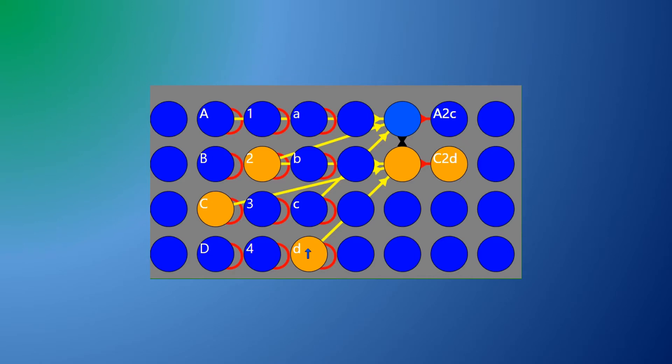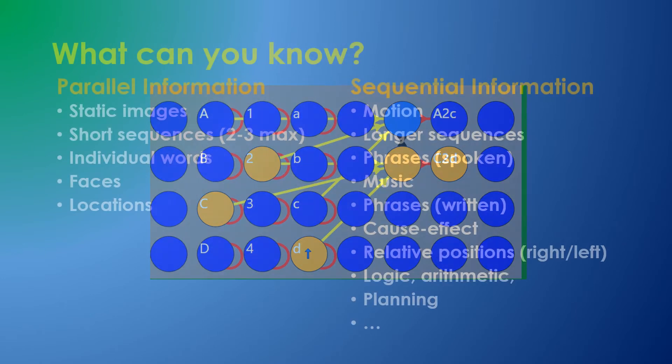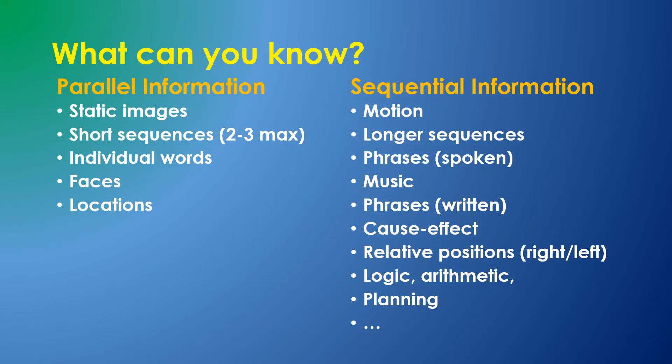But this model relies on the attributes having no order and arriving in parallel. Let's consider sequential or ordered information, something that neurons are not so good at.